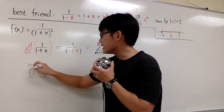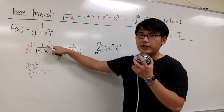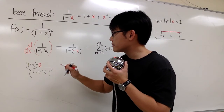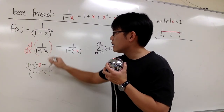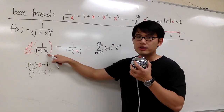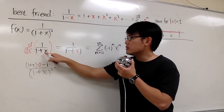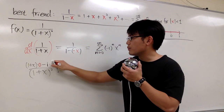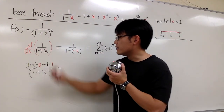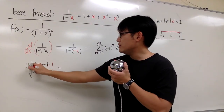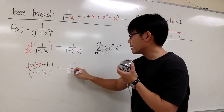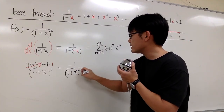The quotient rule says we put down the bottom function, which is 1 plus x, times the derivative of the top. The derivative of 1 is 0, so we have 0 there. Then we subtract the top function, which is 1, times the derivative of the bottom. The derivative of 1 is 0 and the derivative of positive x is 1, so we multiply by 1. The derivative is 0 minus 1 times 1, which is negative 1, over (1 plus x) squared.